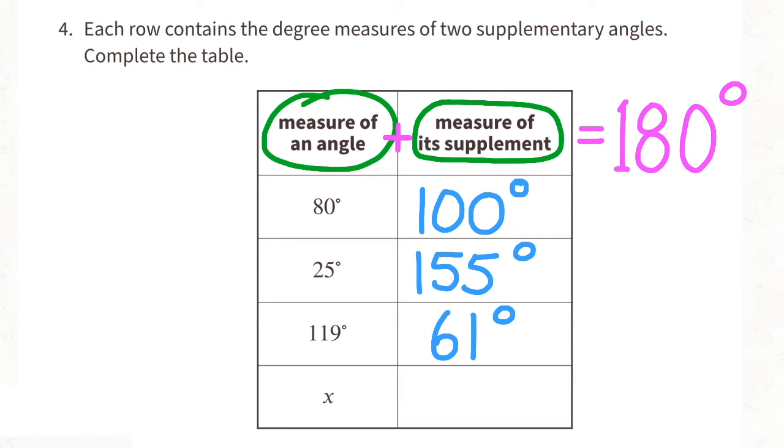119 degrees plus 61 degrees equals 180 degrees. When the measure of an angle is x or an unknown measure, we can find the measure of its supplement angle by subtracting x from 180.